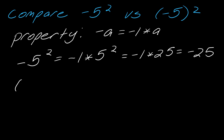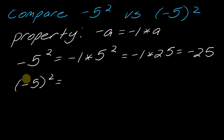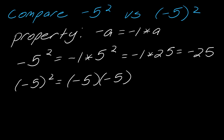Now let's compare that to negative 5 in parentheses, squared. How is this different? If we think about the order of operations, we have to do the parentheses first, which means I cannot break up negative 1 times 5 — this actually has to come first. So I could rewrite this whole thing as taking negative 5 times negative 5, which is what it means to apply the exponent. This is a negative times a negative, so what ends up happening is this is positive 25.